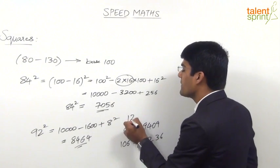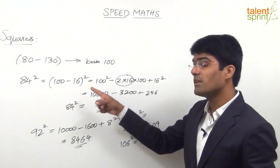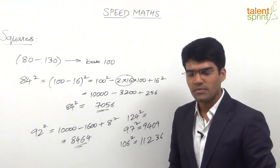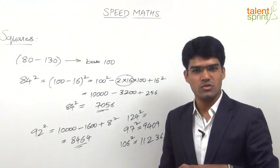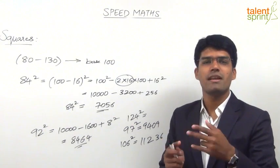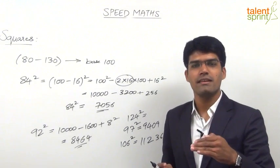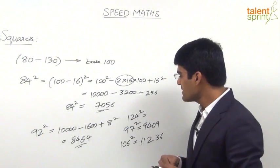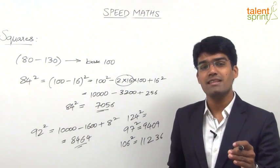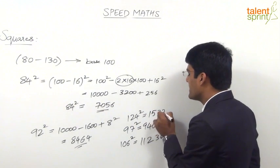Likewise, what is 124 squared? This is really a large number, but if you are comfortable with this technique, finding 124 squared will not take more than 3 to 4 seconds. 124 is 100 plus 24. The first term is 10,000. The second term is double of 24, which is 48, so 10,000 plus 4,800 is 14,800. The last term is 24 squared, which is 576. So 14,800 plus 576 equals 15,376.